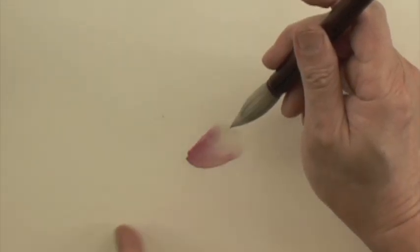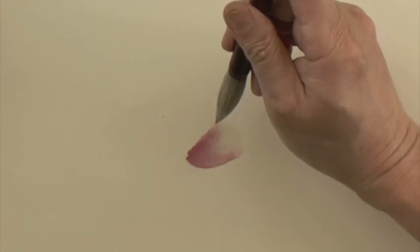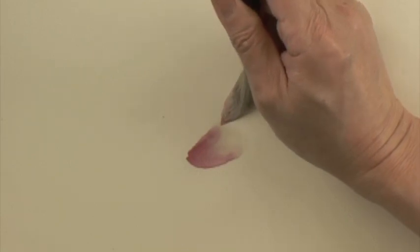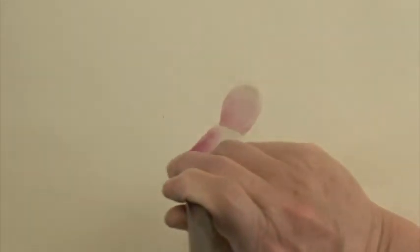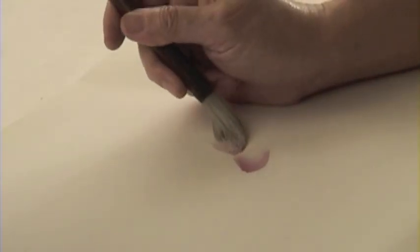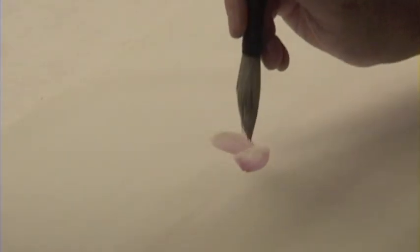Instead of pointing the same way, I will tilt slightly more. So this is like seven o'clock and this way it creates a valley to anchor the whole flower, and this is the other side of the folded petal.